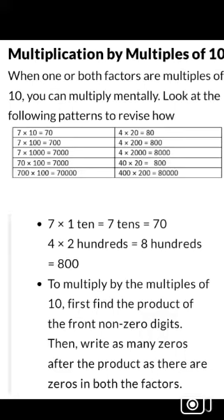Multiplication by multiples of ten: seven into ten is seventy, seven into hundred is seven hundred, seven into thousand is seven thousand. Similarly, seventy into hundred is seven thousand.